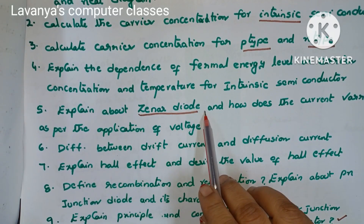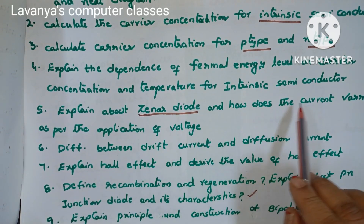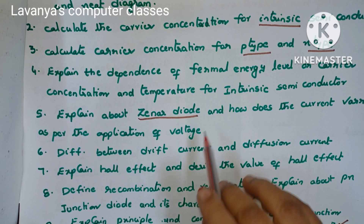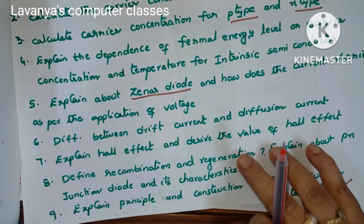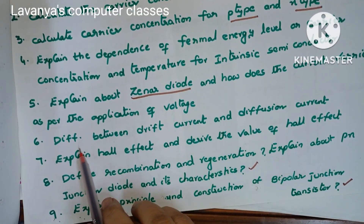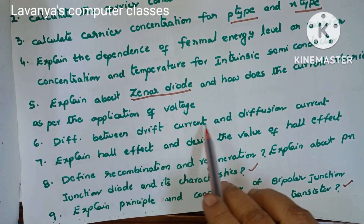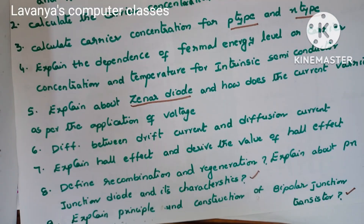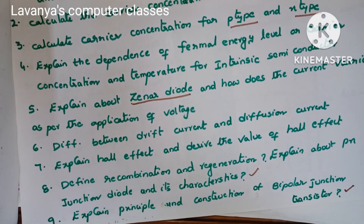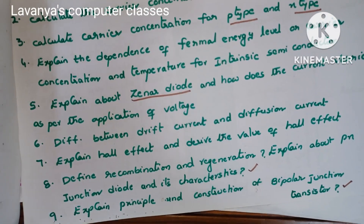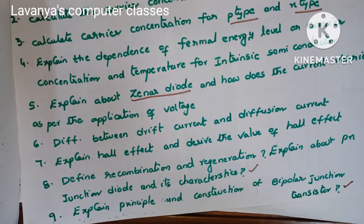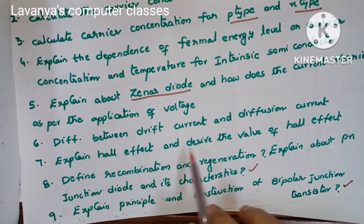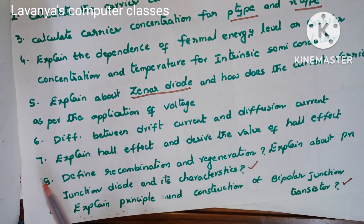Fourth question is explain the dependence of the Fermi energy level or carrier concentration on temperature for intrinsic semiconductors. Fifth question is explain about the PN junction diode and how the current varies with the application of voltage — this is an important question. Sixth question is the difference between drift current and diffusion current.